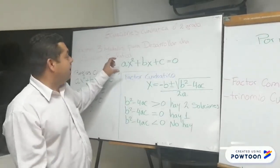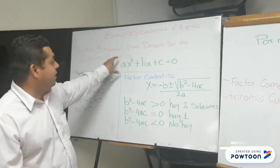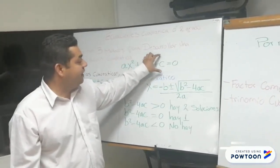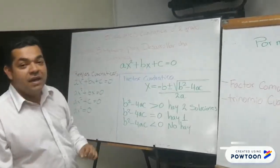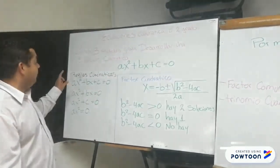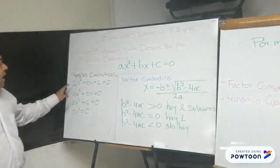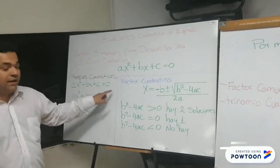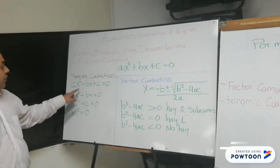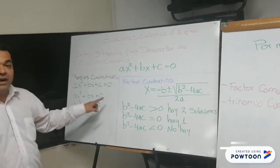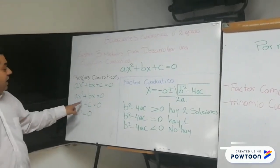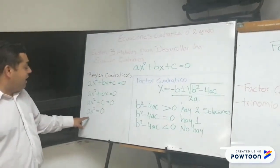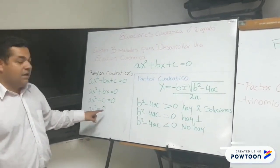¿Cómo identificamos una cuadrática? De esta forma. Hay que tener en cuenta las reglas cuadráticas: AX² + BX + C = 0, AX² + BX = 0, AX² + C = 0, o AX² = 0.